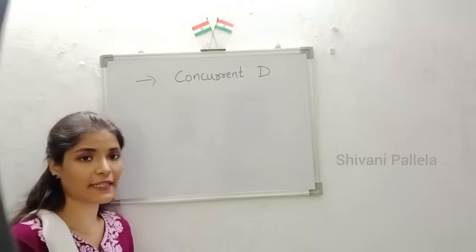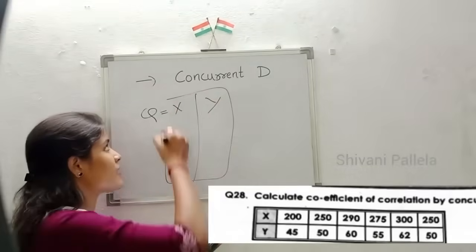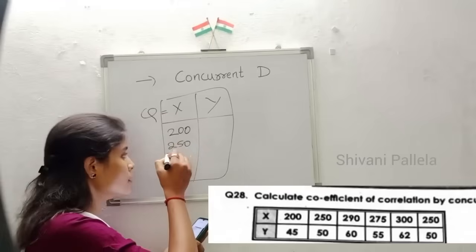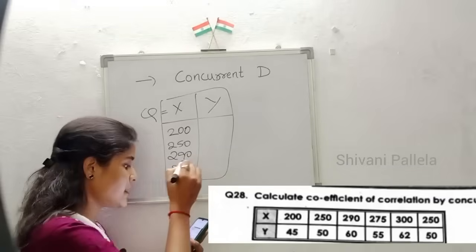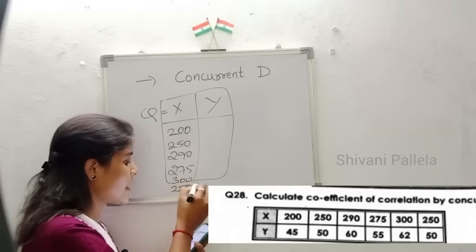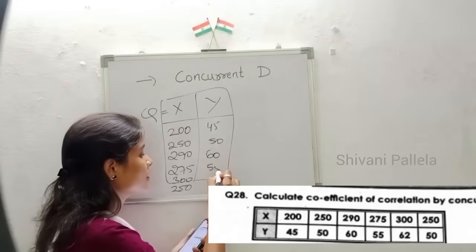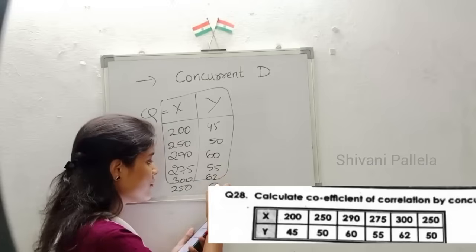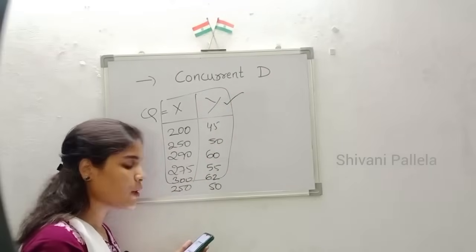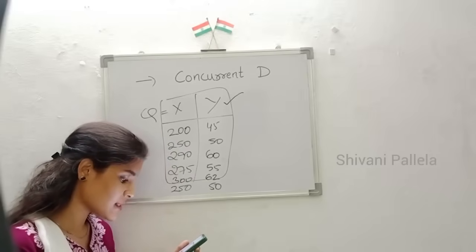Now we will discuss the examination question. X and Y values are given: X = 200, 250, 290, 275, 300, 250; and Y = 45, 50, 60, 55, 62, 50. The question asks us to calculate the coefficient of correlation by the concurrent deviation method.